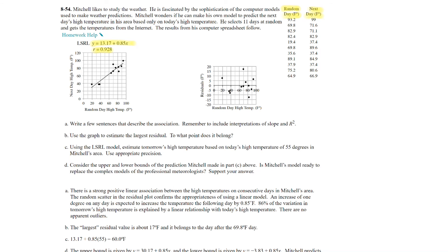So let's go ahead and take a look at the questions that are being asked. Write a few sentences that describe the association. Remember to include interpretations of slope and r squared. So I just pulled this from the answer key from the book here and go through and explain all the stuff that we know. So we know there's a strong positive linear association. We know that partly because of the r value. It's close to 1. We also can see that the line is increasing. So we know a strong positive linear association between the high temperatures on consecutive days in Mitchell's area. The random scatter in the residual plot confirms the appropriateness of using a linear model. So because the data is scattered in the residual plot, it is a good model.